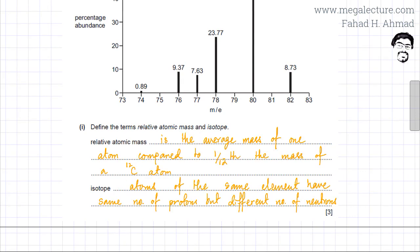So I've written down the definition. Remember CIE wants perfect definitions. They need to use certain terminologies. The definition of relative atomic mass is that it is the average mass of one atom. Remember it's the average mass. It includes all the isotopes. You take the average of all the isotopes according to their percentage abundance. So it's the average mass of one atom compared to one twelfth the mass of a carbon-12 atom. So those masses are calculated in comparison to carbon-12 atom.